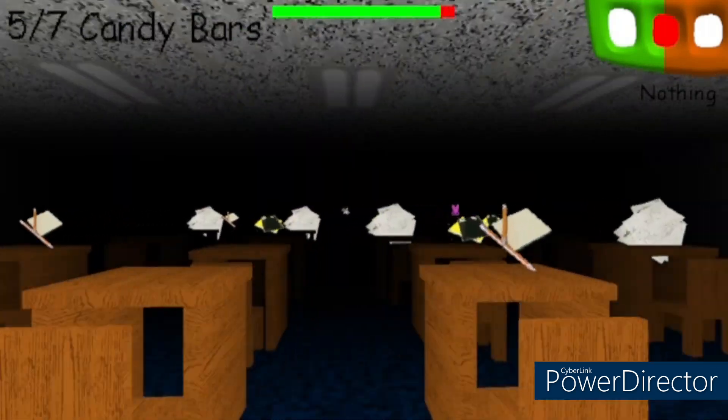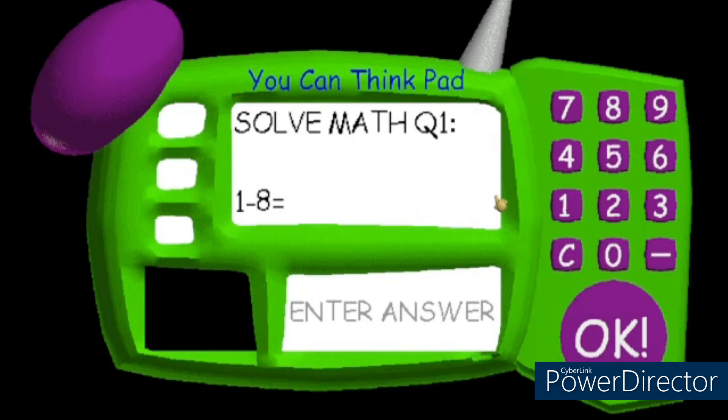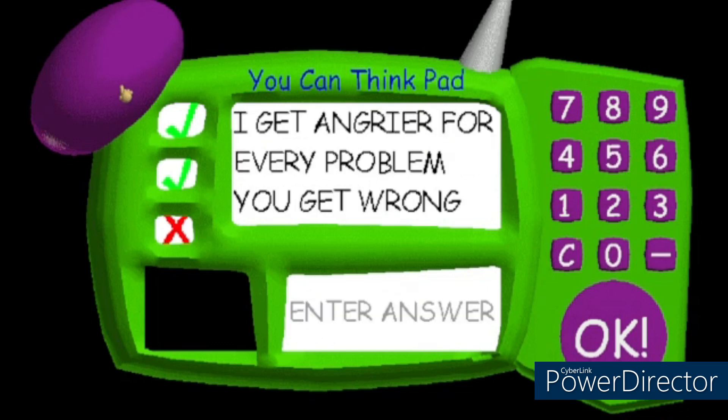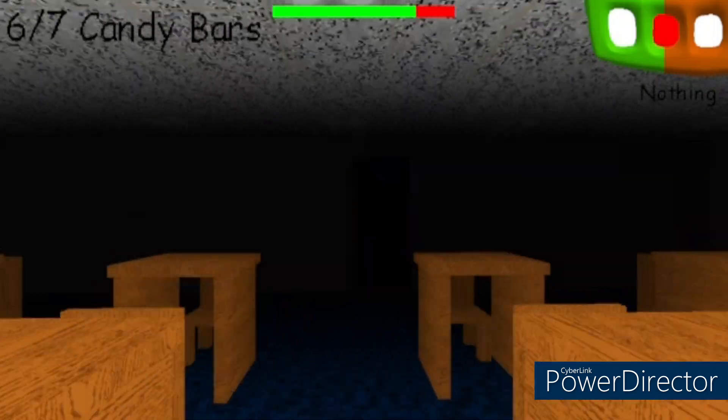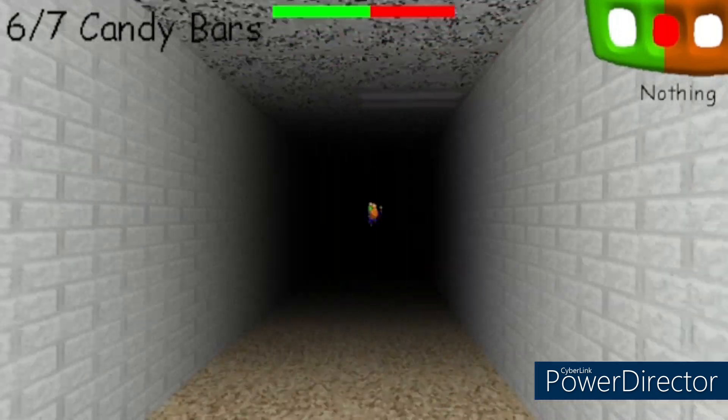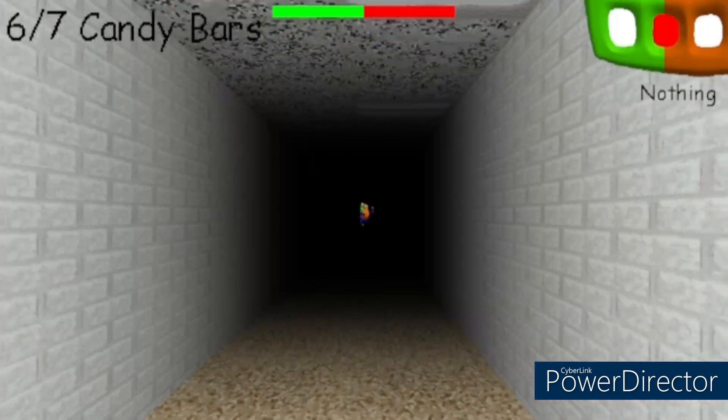I have to run. Get the sixth notebook. One minus eight is negative seven, two minus six is negative four, and this is 677. I get angrier for every problem you get wrong. I am in a rush right now. I gotta run as fast as I can. Okay, that's not bad, they're all the way down there.